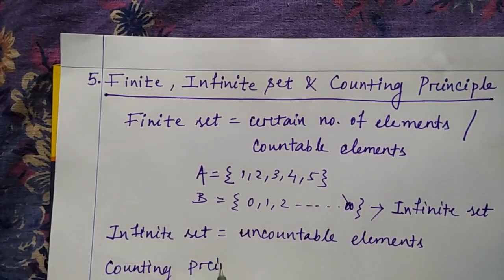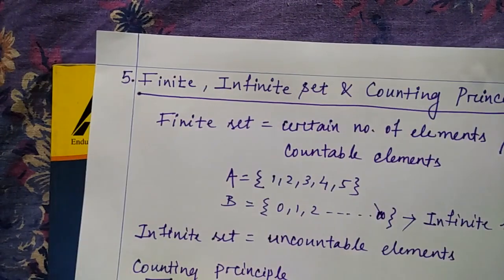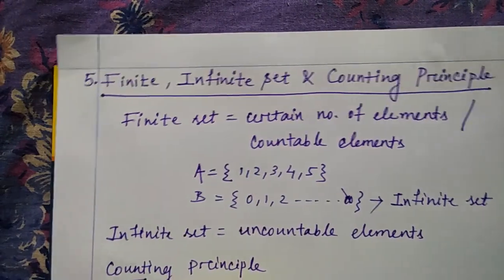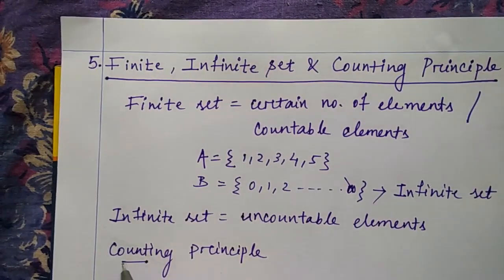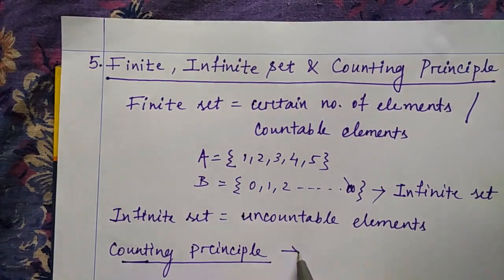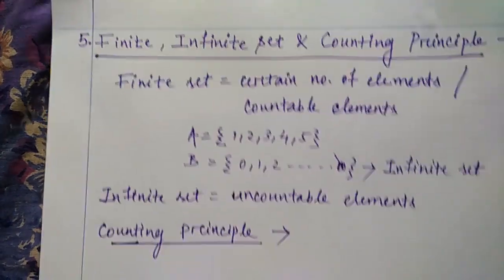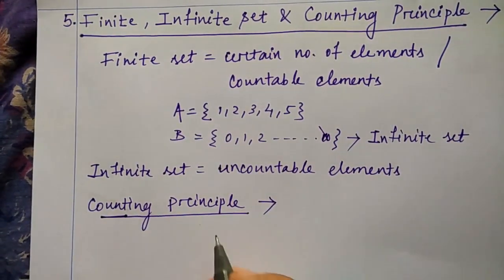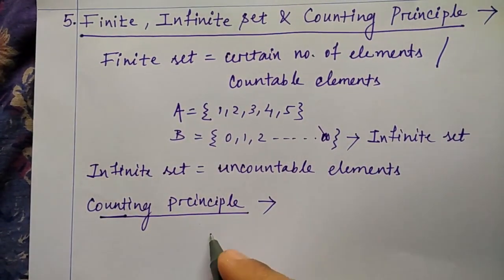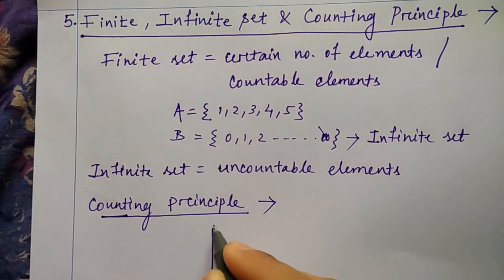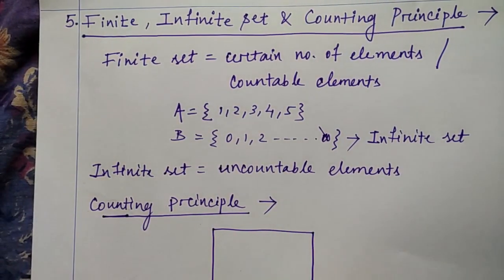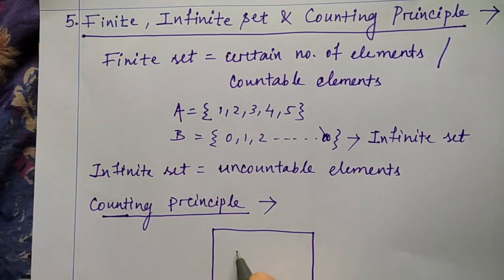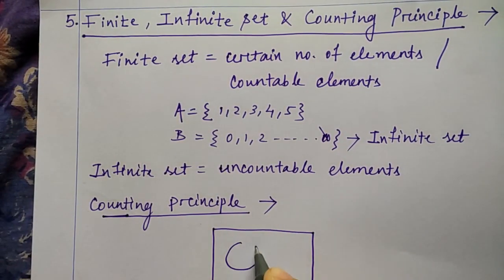The next topic is the counting principle. The counting principle is used to count the total number of elements present in given sets. Normally we have some formulas — let me take one example using a Venn diagram with two sets A and B.